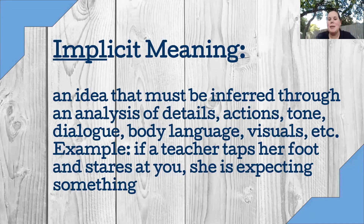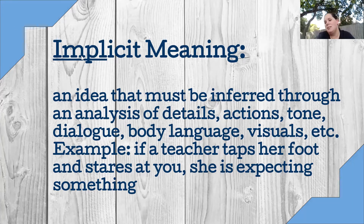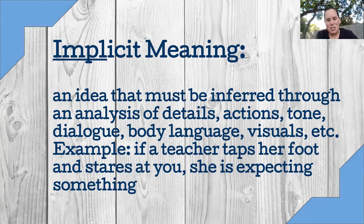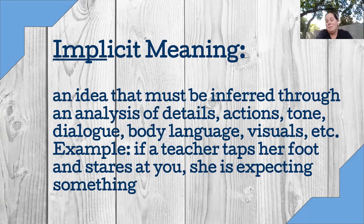We're also going to be talking about implicit meanings. It is an idea that must be inferred through an analysis of details, actions, tone, dialogue, body language, visuals, etc. I have implicit underlined — implicit is implied. It's not specifically said, but you know what it means. An example: if a teacher is tapping her foot and staring at you, it usually means she wants something. You don't know what it is until you know the situation, but she doesn't stand there tapping her foot if she doesn't want you to say or do something.